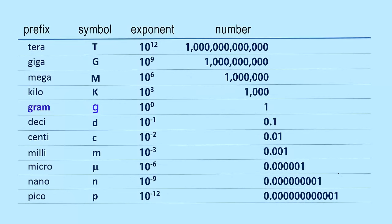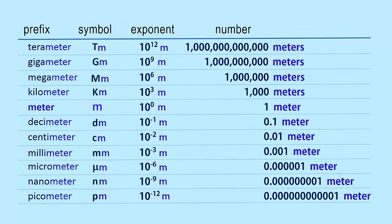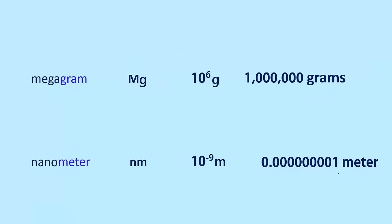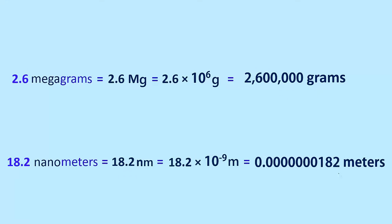Any metric unit can be attached to any prefix, which gives the unit a specific numerical value. And we use the prefixes to represent any number. For example, 2.6 million grams would be 2.6 megagrams or 2.6 Mg or 2.6 times 10 to the 6 grams or 2,600,000 grams. 18.2 billionths of a meter is 18.2 nanometers.